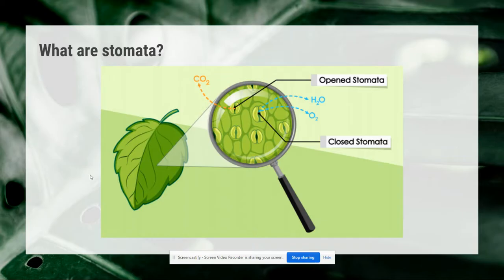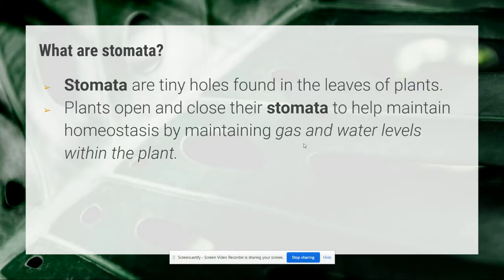You can see here a picture of what these stomata might look like. If you zoom in on the leaf of a plant, you can see these little holes, and these holes can open and they can close. Whether they open or close will depend on what's going on within that environment. Stomata are tiny holes found in the leaves of plants, and plants open and close their stomata to help maintain homeostasis by maintaining gas and water levels within the plant.